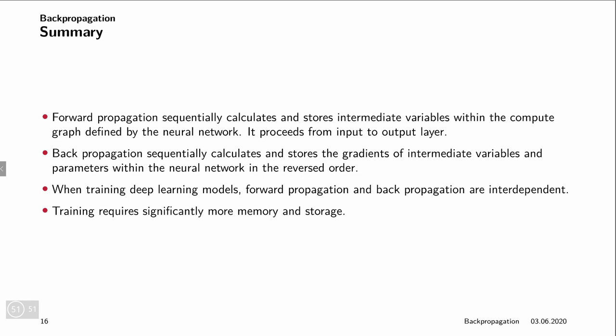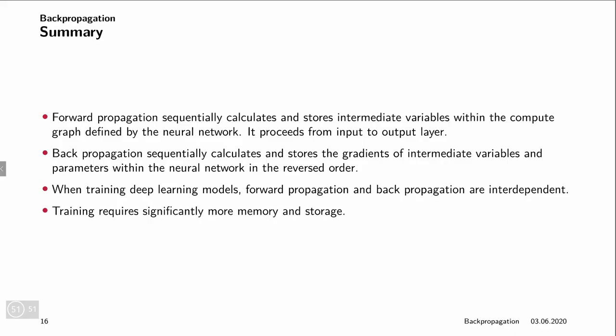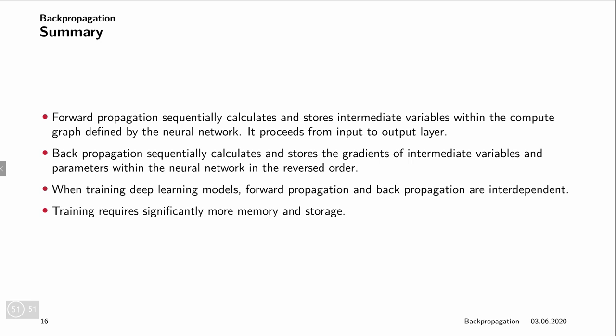To summarize: forward propagation computes all intermediate steps from the input to the output, and is required for the backward pass. Both steps are interrelated because computing the gradient in the backward pass via the chain rule requires all the terms computed in the forward pass, which must be cached. Training therefore requires significantly more memory than just making a prediction with a neural network. Thank you and goodbye — see you next time!